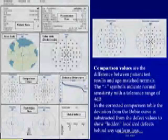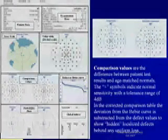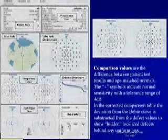Comparison values are the difference between patient test results and age-matched normals. The plus symbols indicate normal sensitivity with a tolerance range of 4 decibels.